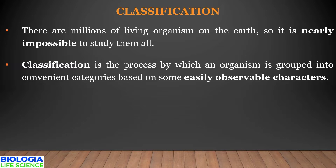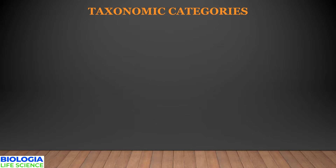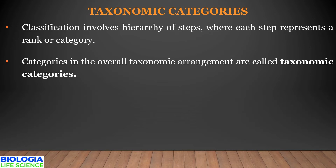Since classification is putting organisms into specific categories, these categories are termed as taxa. Taxa includes categories like cats, fish, frogs, birds, etc. When we classify an organism it involves a hierarchy of steps where each step corresponds to a category, a rank, or a taxon. So the position of a taxon in the hierarchical classification of an organism is termed as a taxonomic category.